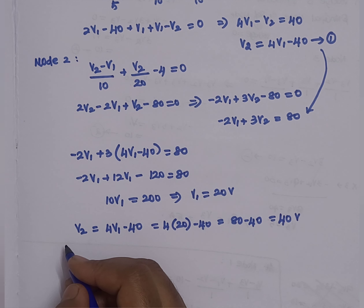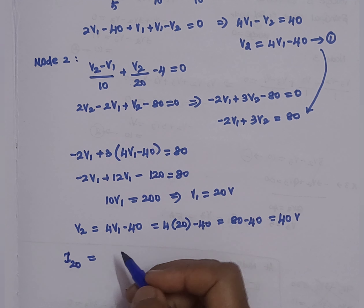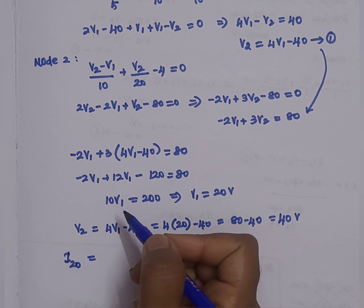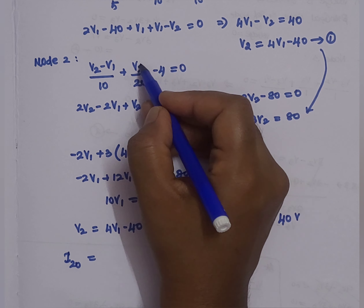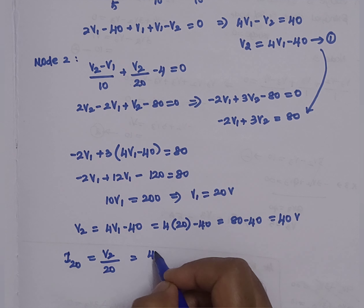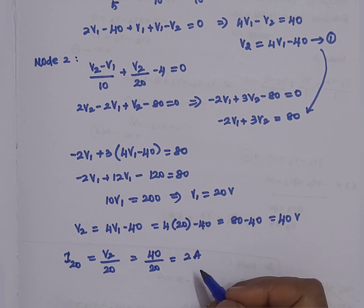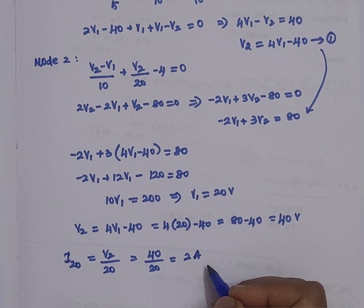The current through the 20-ohm resistor is I20 = V2 / 20 = 40 / 20 = 2 amperes. This is how we calculate the current using nodal analysis.